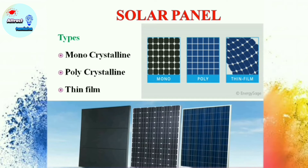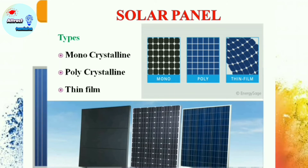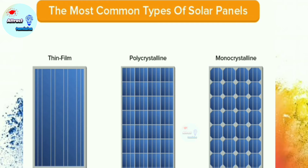Solar panels come in different varieties. We use these three types of solar panels, and the names and characteristics are different — we will compare them to one another. Number one is monocrystalline, number two is polycrystalline, and number three is thin film. These are the three most commonly used solar panels.